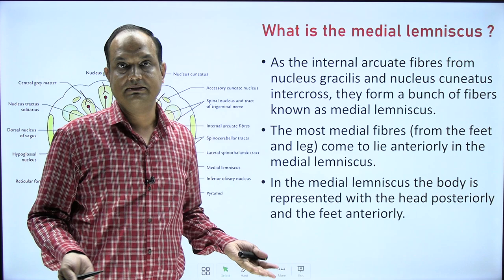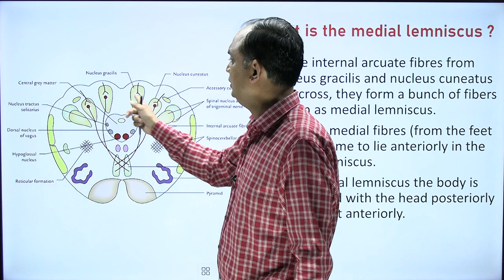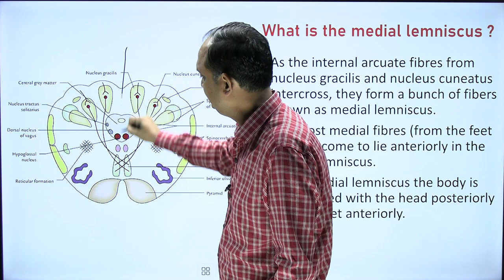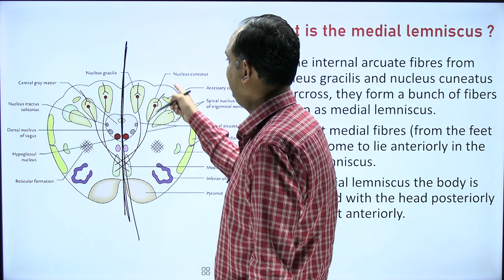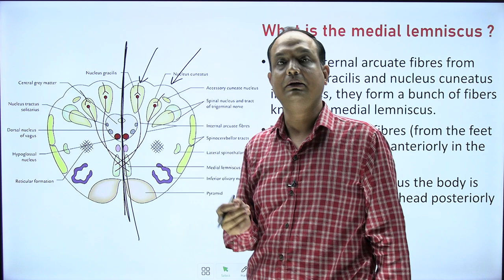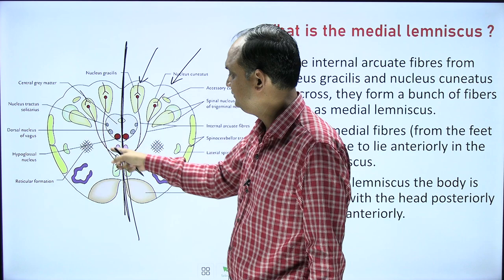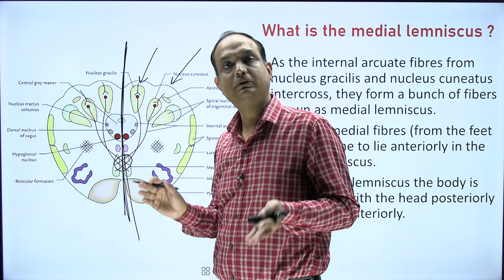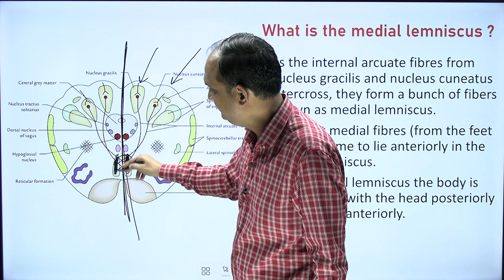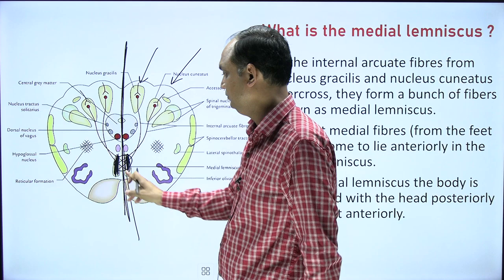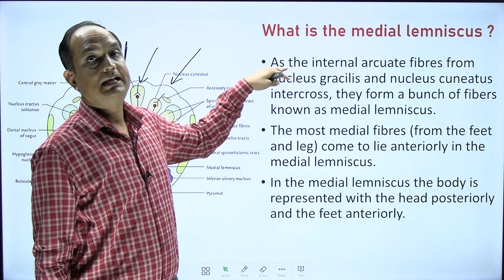What do you mean by the medial lemniscus? When labeling this section, first draw the two gracile and cuneate nuclei on both sides of the midline. Once you have the outline of the medulla, draw the two elevations — tubercle gracilis and tubercle cuneatus. Deep to the tubercle, you will have the nuclei. After drawing the nuclei, draw the fibers crossing in the anterior part. Once the fibers cross, they collect at points on both sides of the midline forming broad areas — this collection of fibers is known as the medial lemniscus.